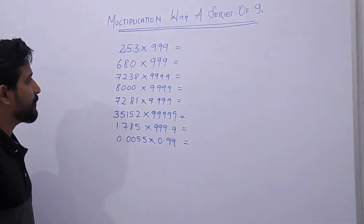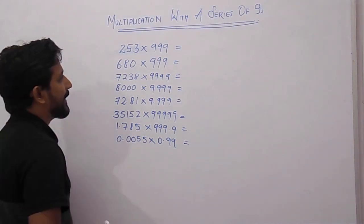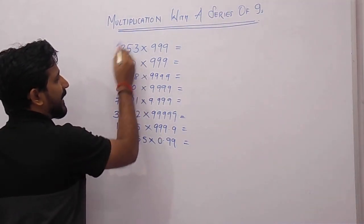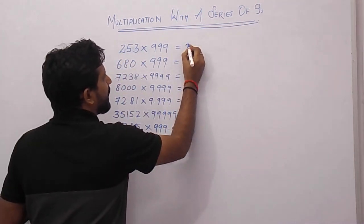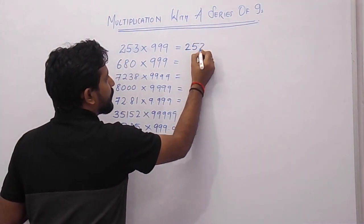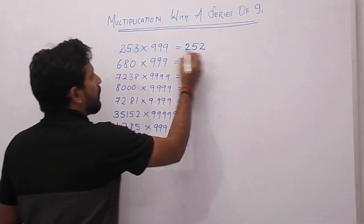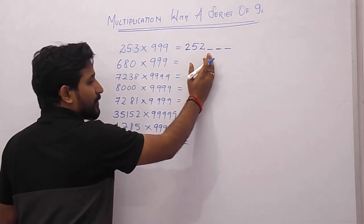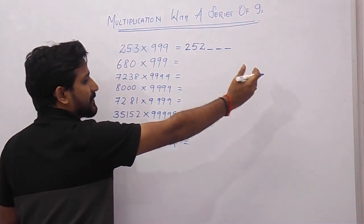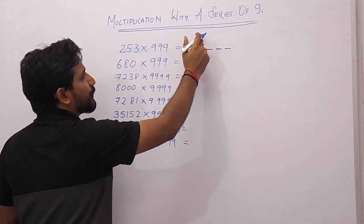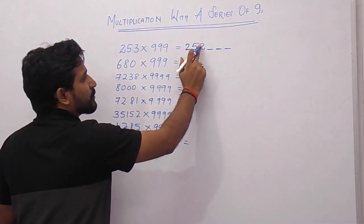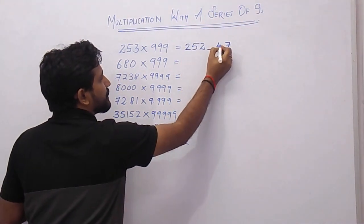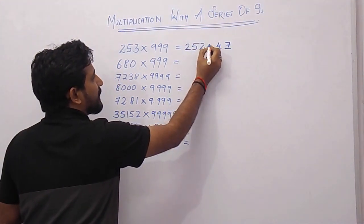For example, you want to multiply 253 with 999. The first step is to decrease this value by 1, so 253 becomes 252. Since it is a 3-digit number, put 3 spaces after it. Now fill these 3 spaces by taking the 9's complement — that is, subtract each digit from 9. So 9 minus 2 is 7, 9 minus 5 is 4, 9 minus 2 is 7.